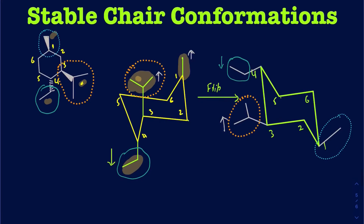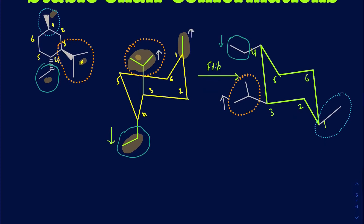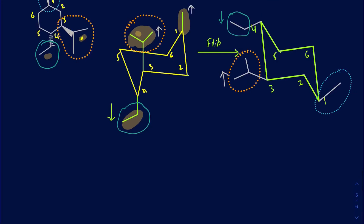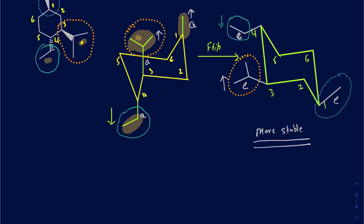Now I have these two conformations — the question is which one is going to be the most stable. In the first conformation, I see all three groups are on the axial position. In the second conformation, all three groups are equatorial. The more groups you have on the equatorial, the better. Also, the biggest group needs to be on the equatorial — in this case that's the isopropyl group. Since everything is on the equatorial in the second conformation, the second conformation is going to be more stable.